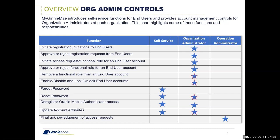Just a reminder on what it is that you can do as an organization administrator. That middle column with those stars shows all of the functions that you as an organization administrator are able to complete on behalf of end users in your organization. The operations administrator at the Bank of New York Mellon is only able to provide final acknowledgment of access requests for functional roles on behalf of end users. Operations administrators are solely responsible for onboarding an organization administrator as part of this initial push to get you into MyGenieMay. Going forward, it is the organization administrator that manages all of these other functions — initiating a registration invitation, approving or rejecting — all of those functions with stars lined up for the organization administrator are the functions that you would complete.